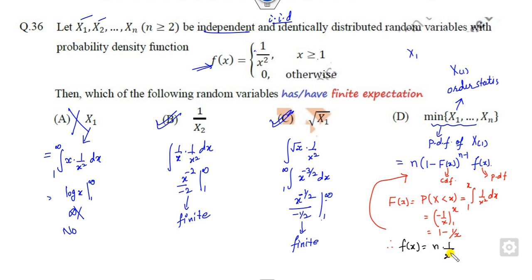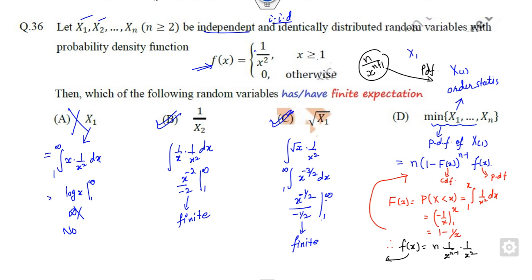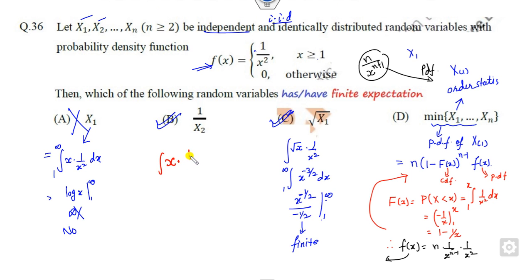Substituting into the order statistics PDF formula: the PDF of X(1) is n times (1 − CDF)^(n−1) times the PDF. This gives n/x^(n+1). To find the expected value E[X(1)], we integrate x times n/x^(n+1) dx from 1 to infinity, which simplifies to integrating n times x^(−n).